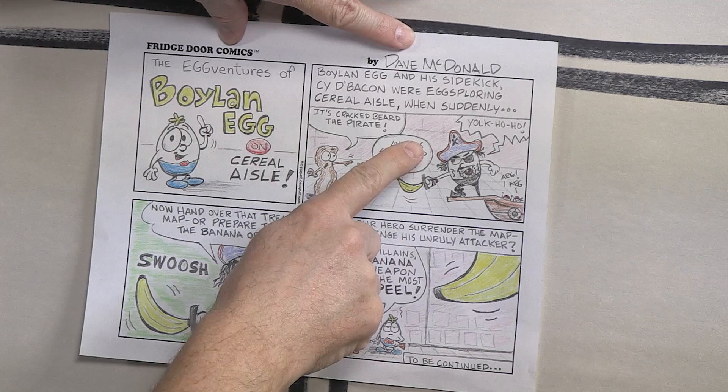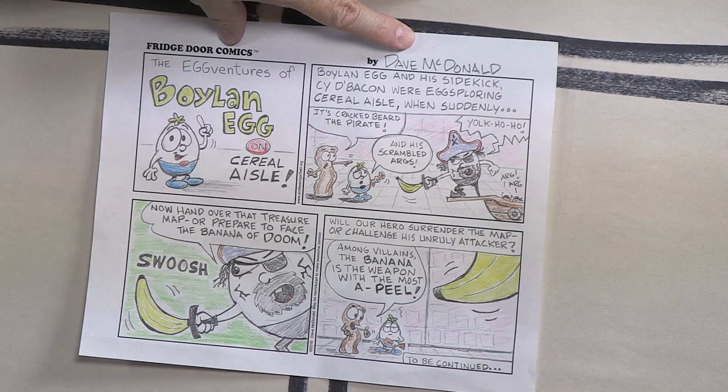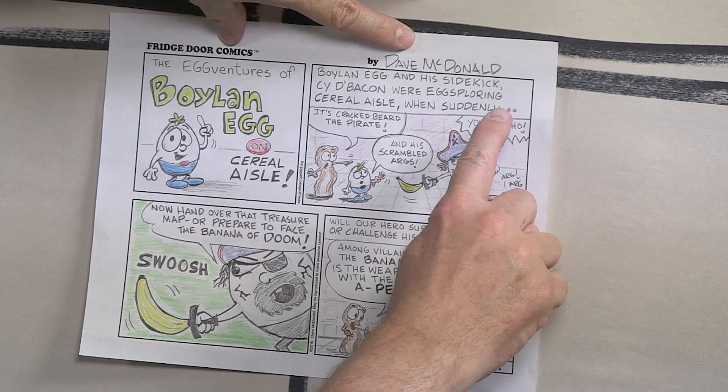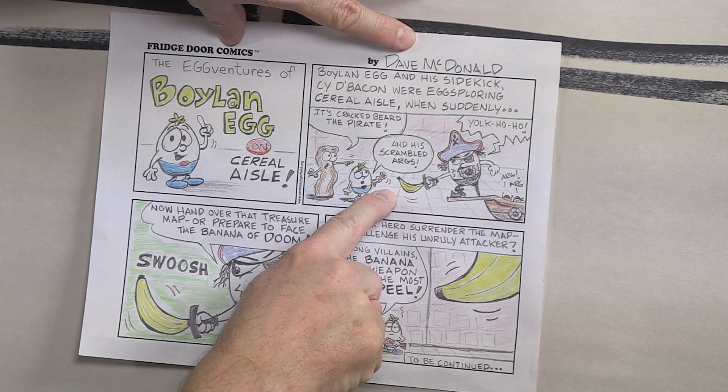All right, so here's the first story panel. Let me read the caption box here. Boilin' Egg and his sidekick, Cy DeBacon, were egg-sploring Cereal Isle when suddenly... it's Cracked Beard the Pirate and his band of scrambled args.